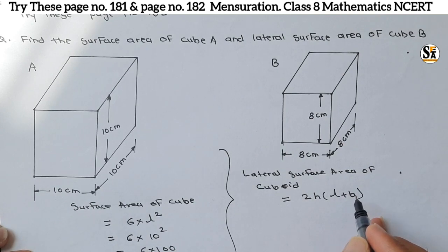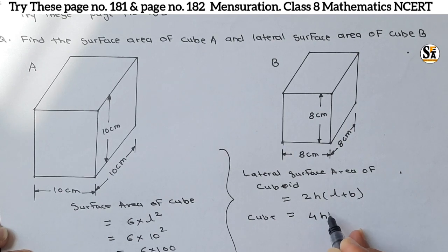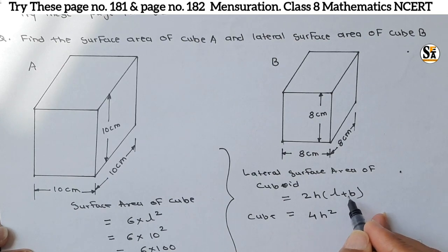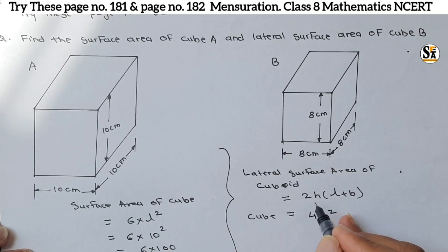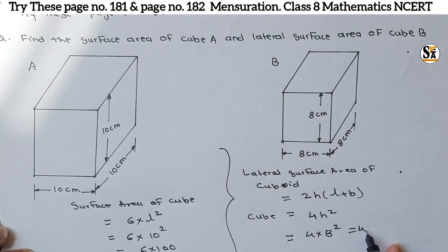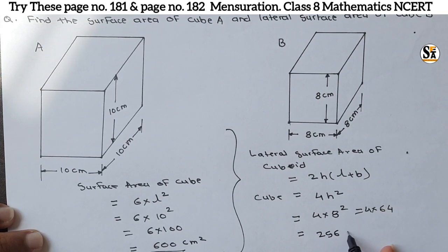Replacing all values with h: 2h into (h plus h) = 2h into 2h = 4h squared. So the lateral surface area of a cube is 4s squared. Here h is 8 centimeters, so: 4 into 8 squared = 4 into 64 = 256 centimeters square.